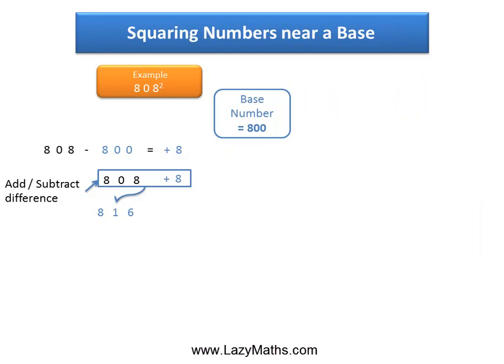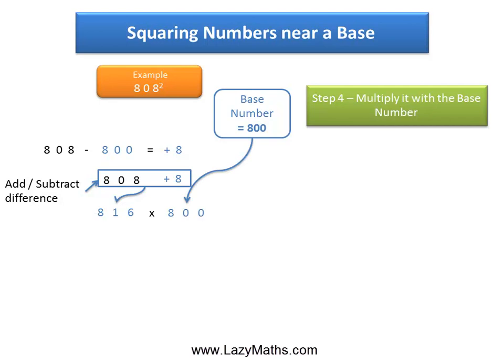The next step is to take the 816 and multiply it with 800, which is the original base number, and we get 652,800 as the product.